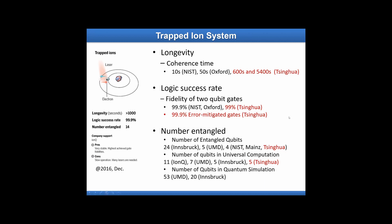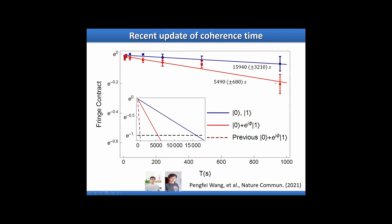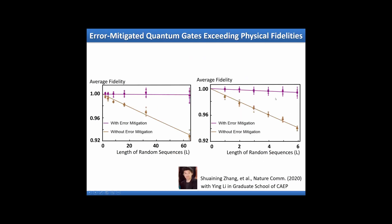Here is some experimental data: about three or four years ago we made a record of about 10 minutes coherence time, and now the record is over hours. We've also pushed our gate fidelities — single qubit operation is 99.9% and two-qubit operation is 99%. With error mitigation methods we improve the fidelity to 99.999% and 99.9%. We are happy to see these improvements, but for really big computations we have to improve further.